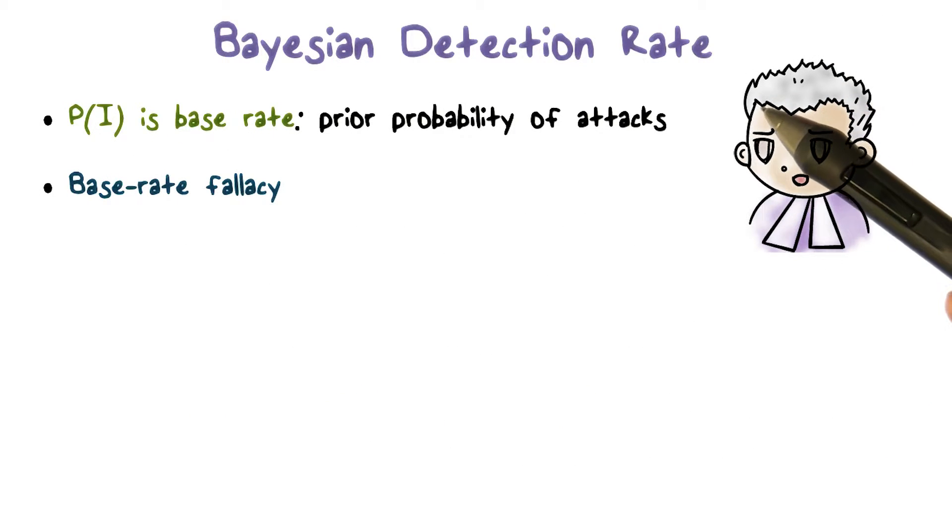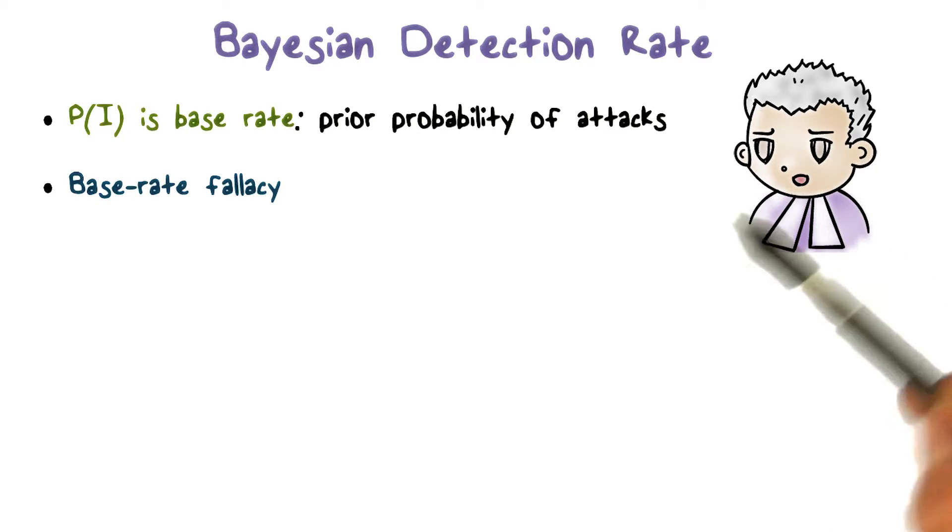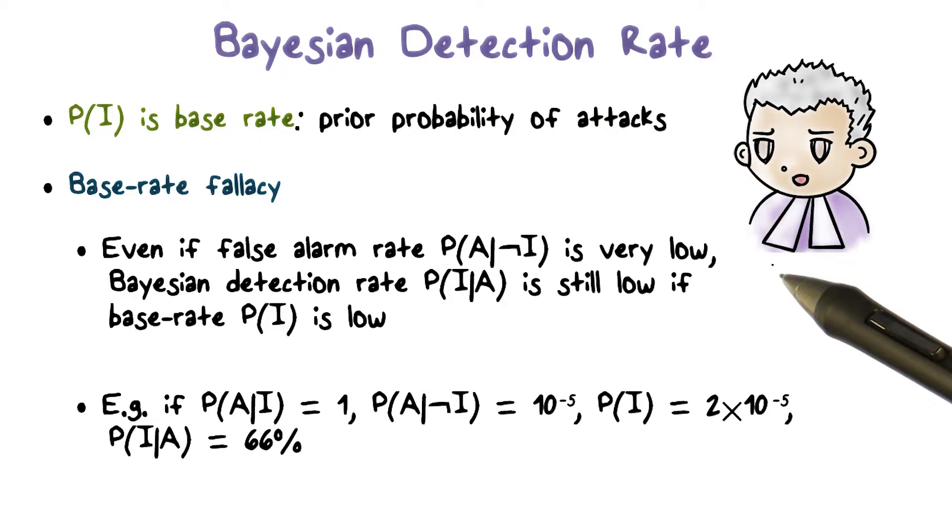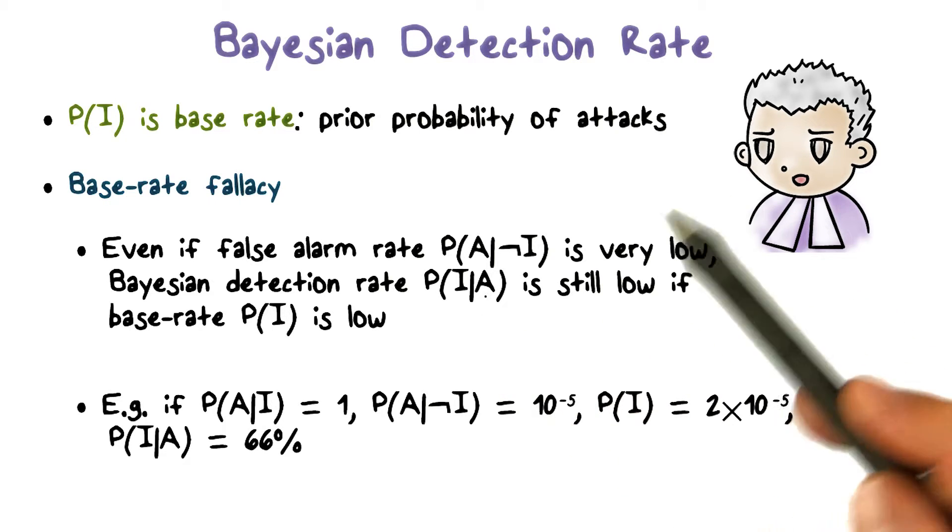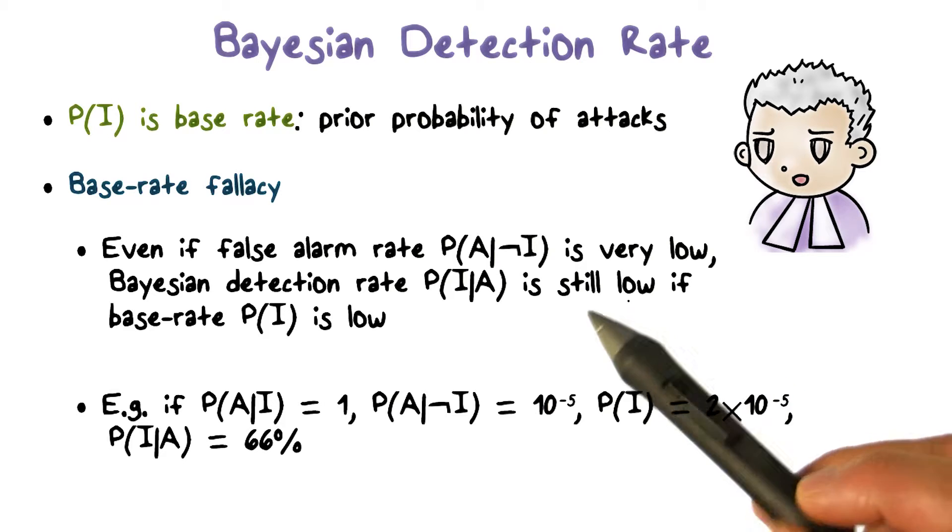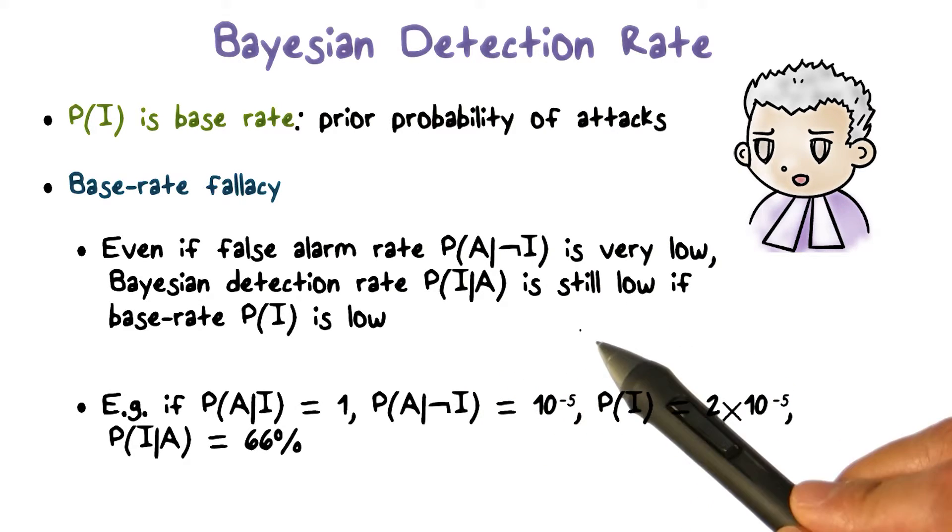There's an interesting phenomenon about Bayesian detection rate called the base-rate fallacy. Even if the false alarm rate is very low, as long as it is not zero, then the Bayesian detection rate is still low, even if the base rate is also very low.